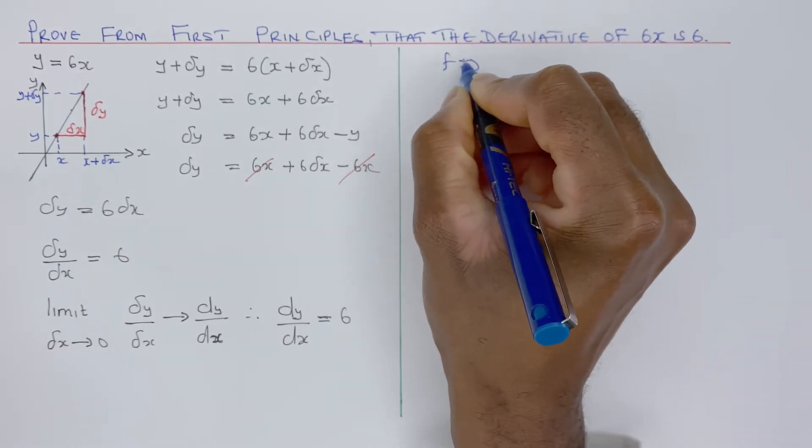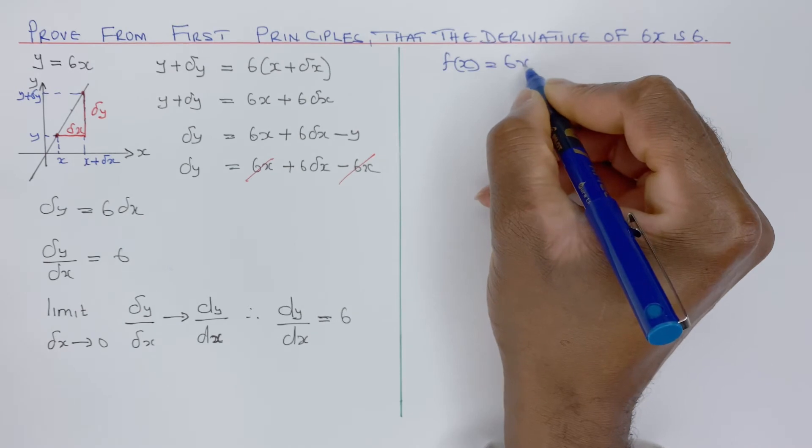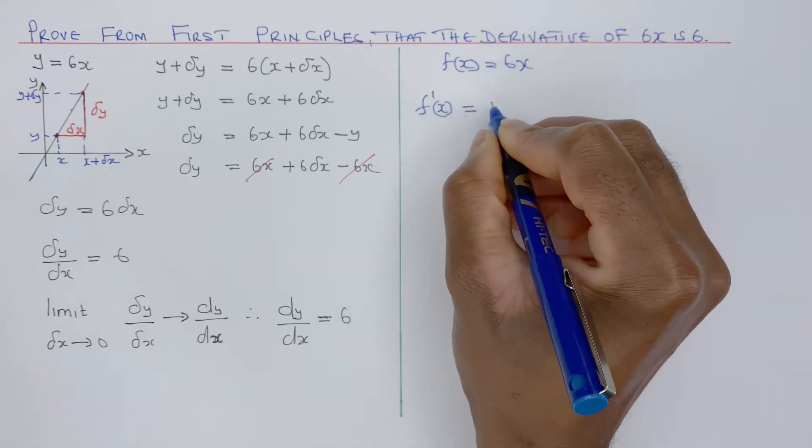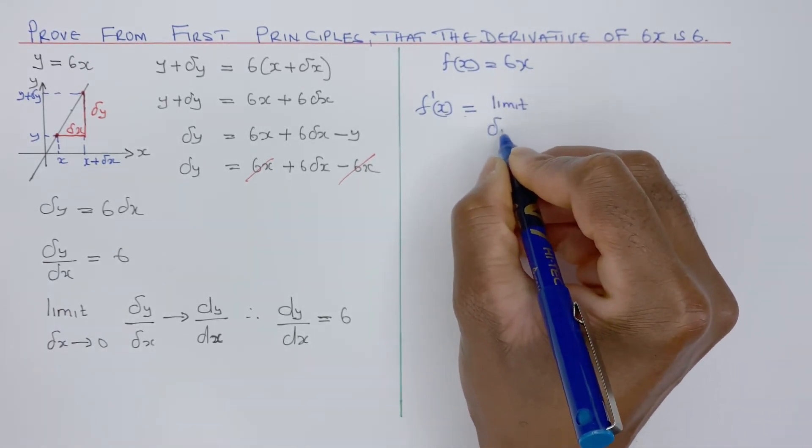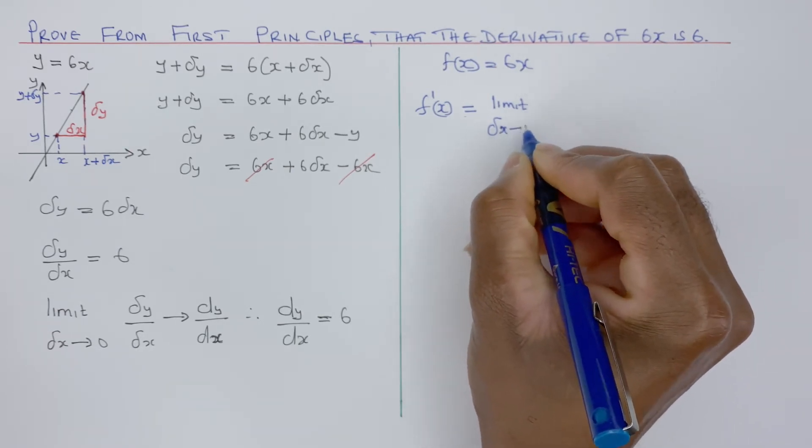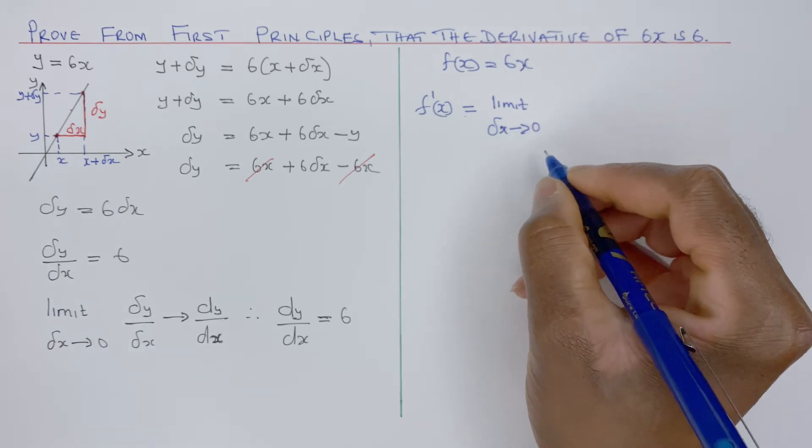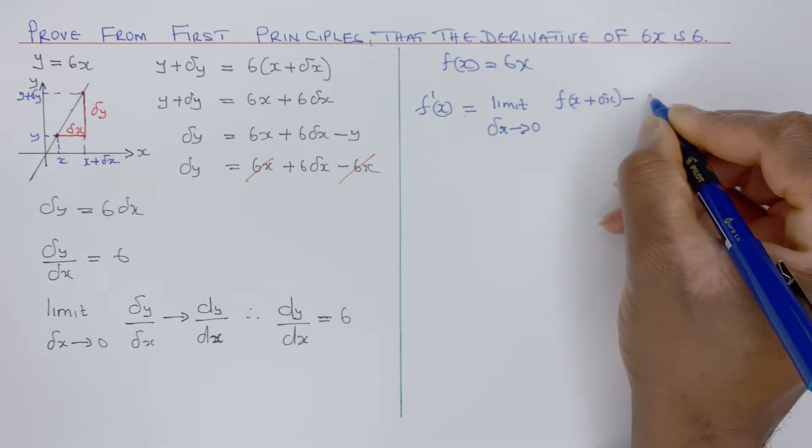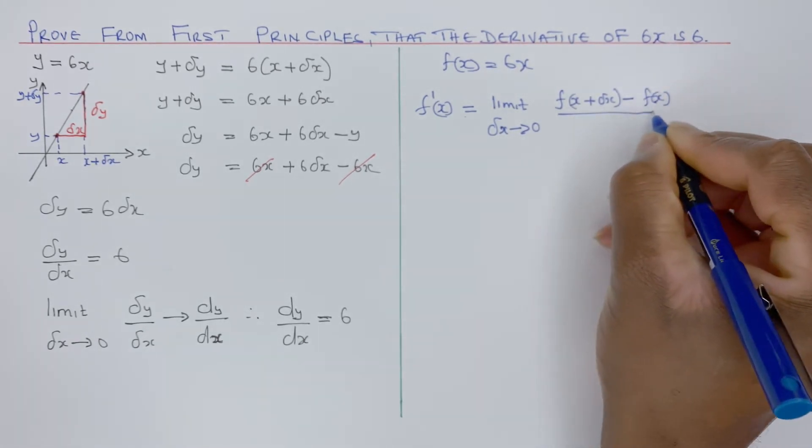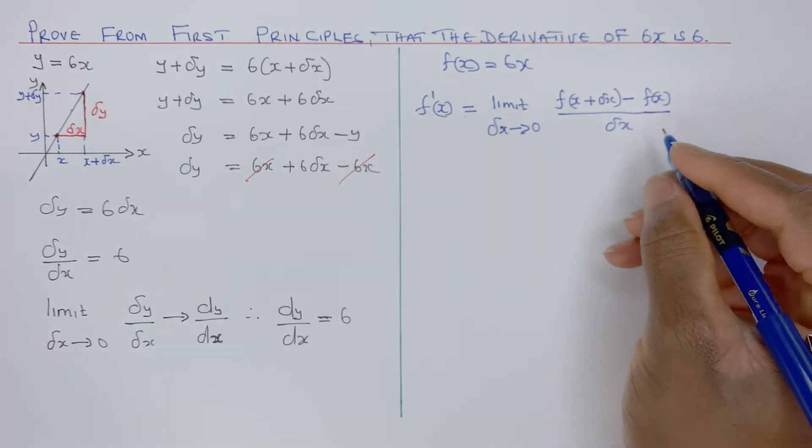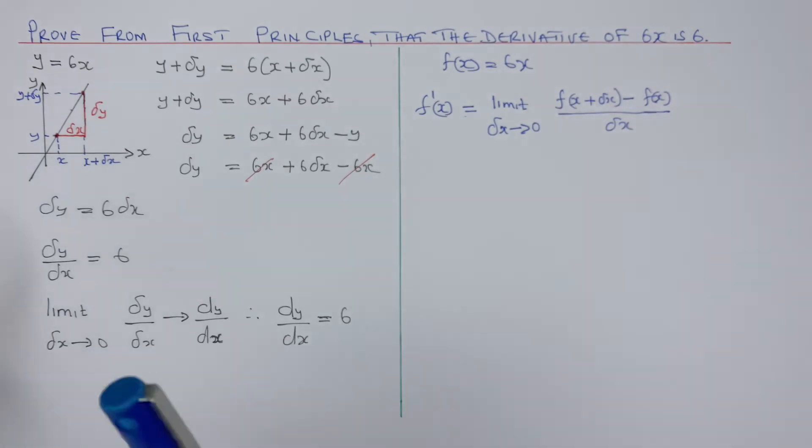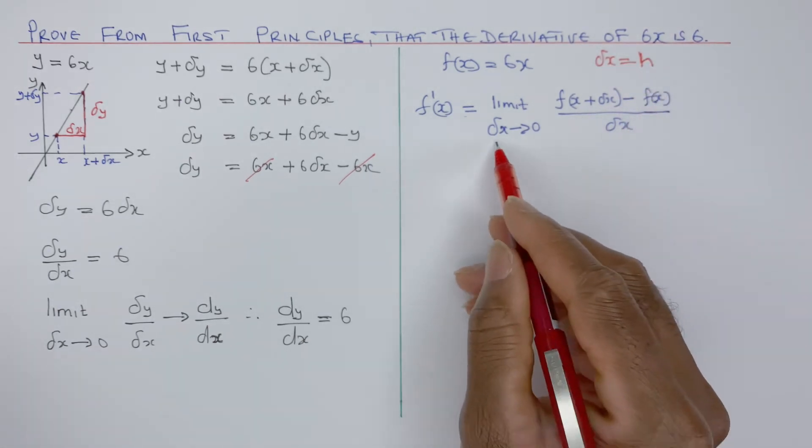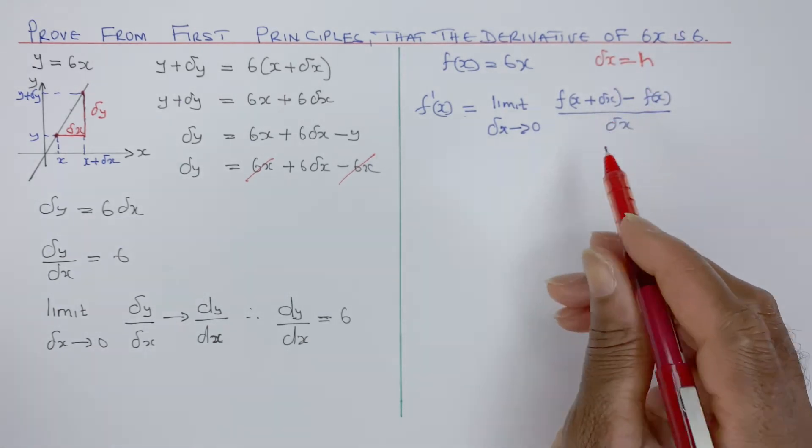f dash x. And then you have to say, in the limit, where delta x, or h if you like, delta x tends to 0. So f of x plus delta x minus f of x divided by delta x. That's the formula we're going to use. Remember, some books write delta x as h. So you'll be seeing h here, h there, and h there. Same thing.